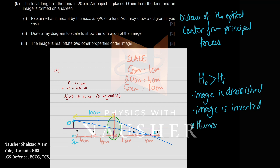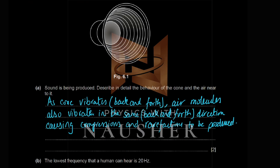In a loudspeaker, the cone vibrates back and forth due to two magnetic fields producing a force. This causes air molecules in front to also vibrate back and forth, generating compressions and rarefactions in the air — that's how sound is produced. The air molecules vibrate in the same direction as the cone, producing sound that travels away from the speaker.